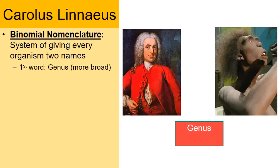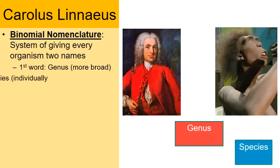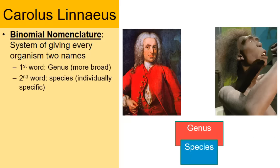In this system of giving every organism two names, the first word is a broader word called the genus category, and the second word is more specific — it's called the species name. For example, both humans and Homo erectus share the genus Homo, showing it's a broader category that applies to more than one organism.